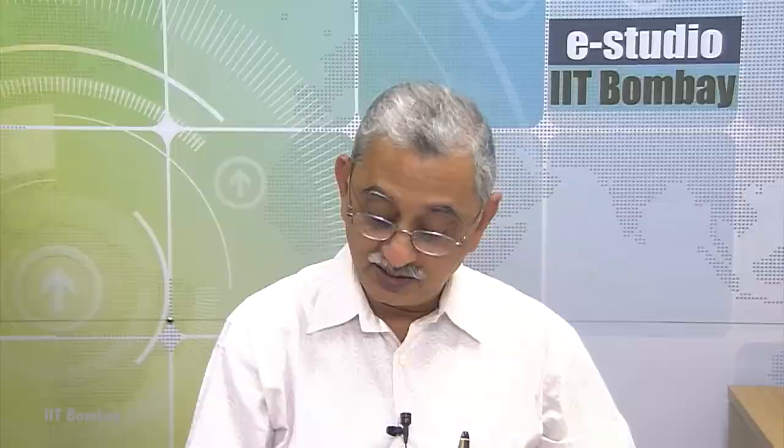So here, the performance parameter is the efficiency, defined as W by Q1. It is a ratio, a dimensionless number. We can represent it either as a fraction, like 0.2, 0.3, 0.4, or as a percent, like 20 percent, 30 percent, or 40 percent.